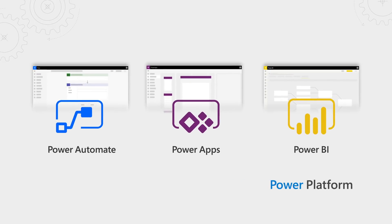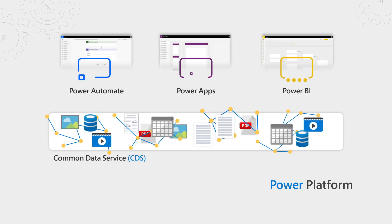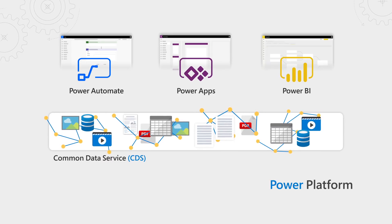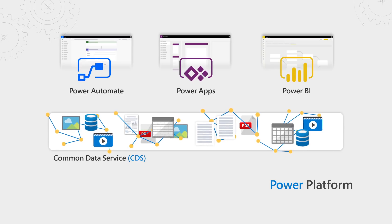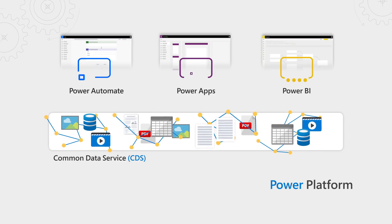Thank you, glad to be here. So Power Platform is really our family of low-code, zero-code tools — Power BI, Power Apps, and now Power Automate. These sit on top of the Common Data Service, which stores all of your structured business data and makes it easy to secure it and use it across all your different applications, as well as introduce additional logic to enrich that data.